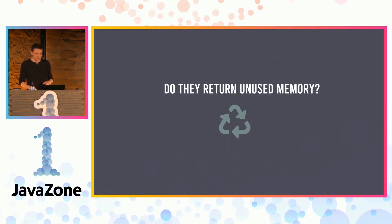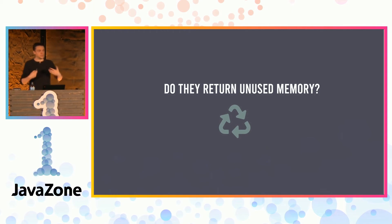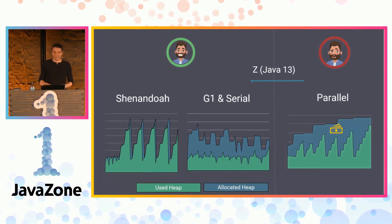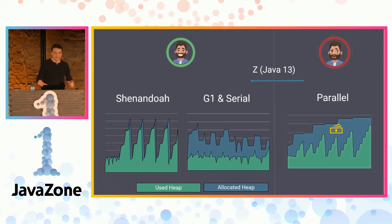This is important if your application is running in the cloud and you are paying for heap usage — these garbage collectors give back the resources you don't use to the OS. Serial and G1 are very conservative and don't like to release memory to the OS because it's an expensive activity. Shenandoah is very good at this and can release unused heap to the OS very quickly, making it an excellent choice if you are paying for used resources in a cloud environment.